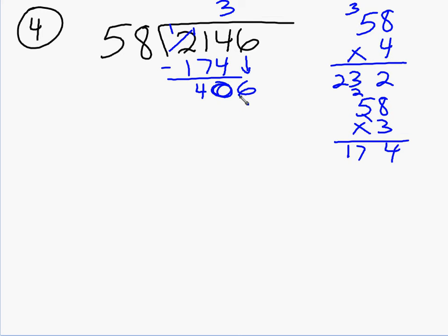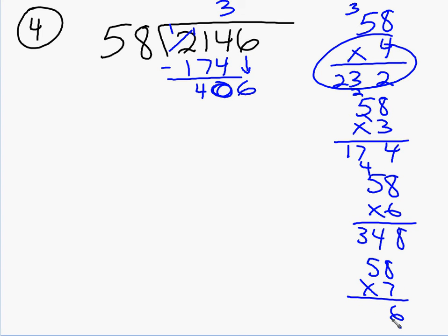So now I'm doing 58 into 406. So I need to come over to this side. I knew that 58 times 4 was 232. So I need to try at least maybe 58 times 6. 6 times 8 is 48. Carry a 4. 6 times 5 is 30 plus 4 is 348. I think I should try 58 times 7. 7 times 8 is 56. Carry a 5. 7 times 5 is 35 plus 5 is 40. How about that? It's exact. So I put the 7 above the 6. I just found out that 7 times 58 is 406. So I put the 406 here. Subtract and I get a 0.